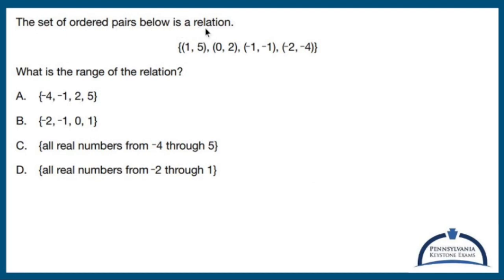The set of ordered pairs below is a relation: (1, 5), (0, 2), (-1, -1), (2, -4). This is a function, but that's not what it's asking me. What is the range of the relation?